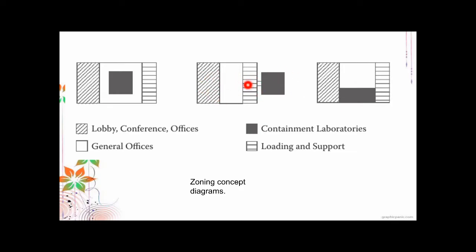Another preferred zoning concept has the containment laboratory as a separate, restricted zone, with loading and support, general offices, and lobby and conference areas clearly delineated. The containment lab has a direct connection to the loading and support zone. A third concept shows the containment laboratory opening to both the general offices and the lobby and conference areas. These are examples of how you arrange zones in your facility based on the risk and operational needs.